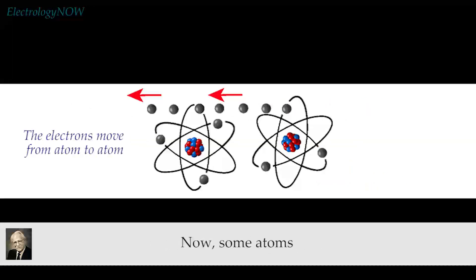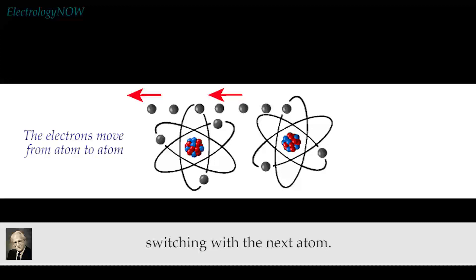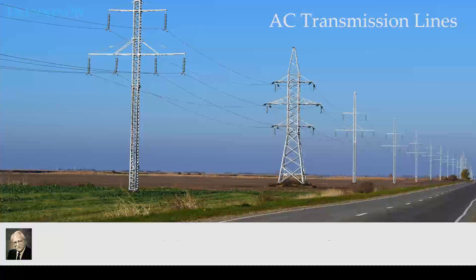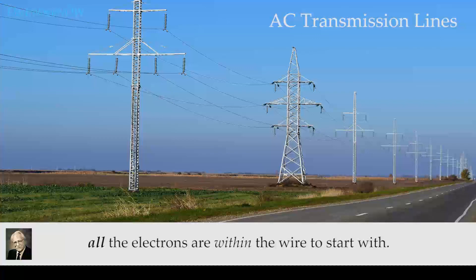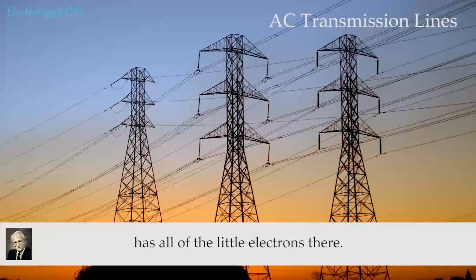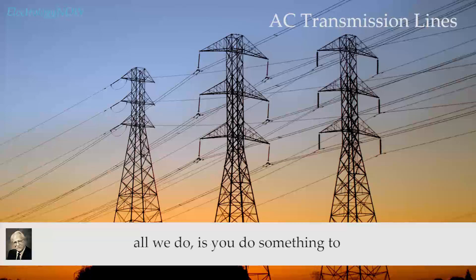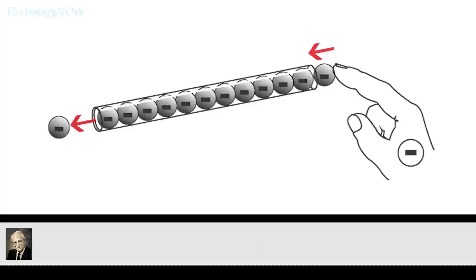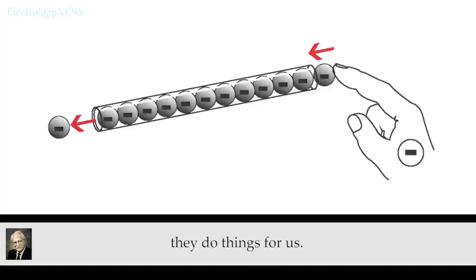Some atoms don't like their electrons to get away, and other atoms don't mind their electrons switching with the next atom. When you have a piece of copper wire and you want electrons to flow down that wire, all the electrons are within the wire to start with — every little atom of copper has all of its little electrons there. So when we say we're going to produce a flow of electrons, all we do is disturb the electrons that are already present in the copper atoms. You push the electrons that are already within the wire along, and in pushing them around, they do things for us.